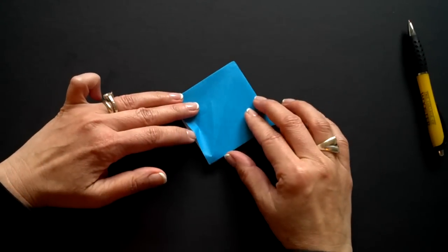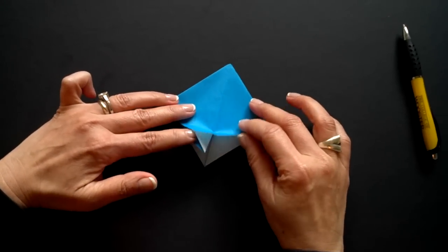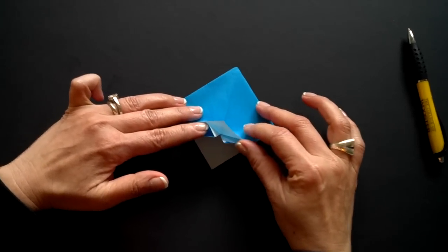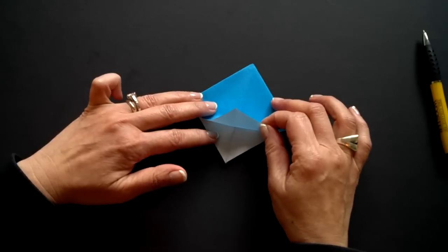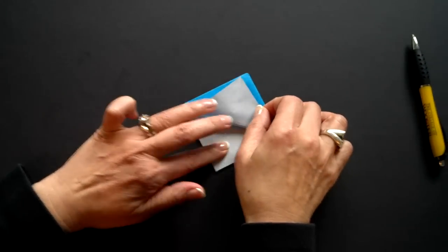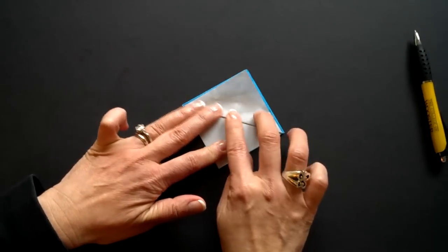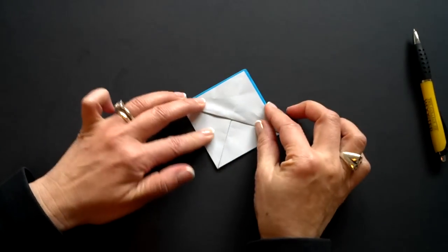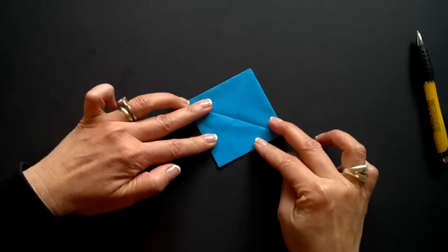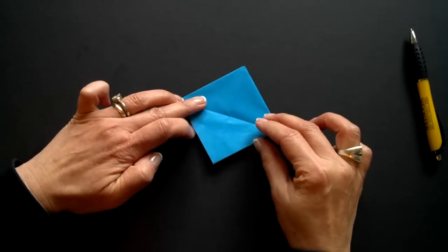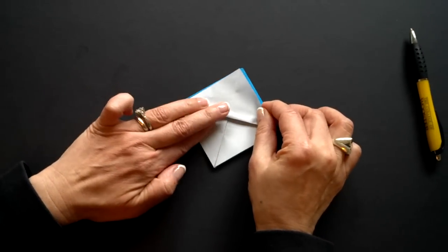With the opening at the bottom, you can see all these little flaps. We're going to take just this top corner and fold it to the top. So from here to here.